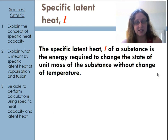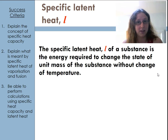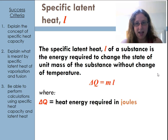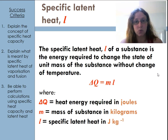The specific latent heat of a substance is defined as the energy required to change the state of unit mass of the substance without changing the temperature — in other words, the energy required to change the state of one kilogram. The equation is ΔQ = mL, where ΔQ is in joules, m is in kilograms, and L is the specific latent heat in joules per kilogram — which you can figure out directly from the equation.